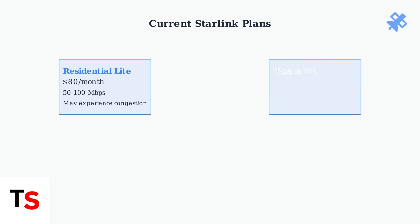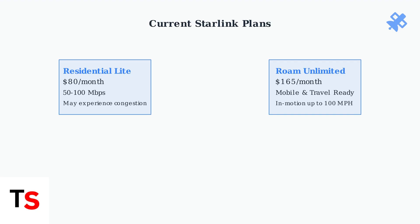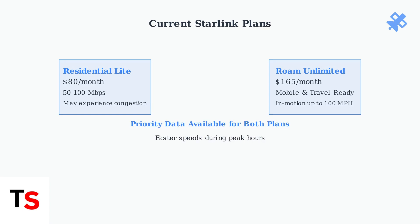Roam Unlimited costs $165 per month and is designed for users who need Internet access while traveling. This plan supports in-motion use up to 100 miles per hour. Both plans offer priority data upgrades for faster and more consistent speeds during peak usage times. This premium option ensures better performance when network congestion occurs.